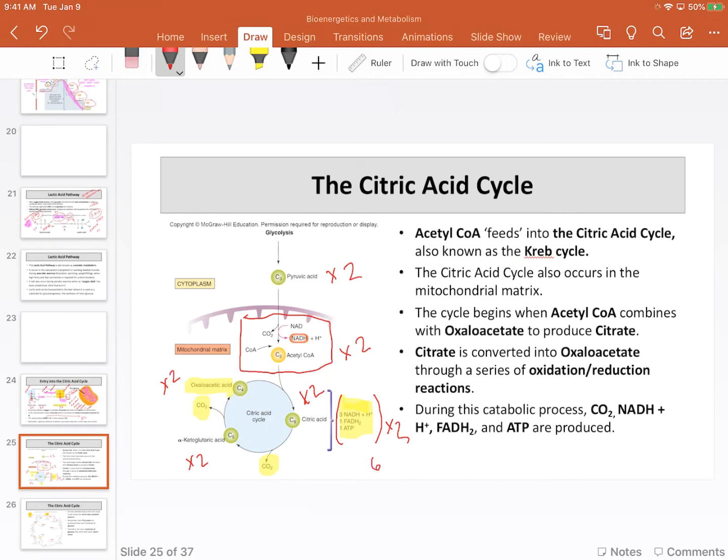Just to add this up here, that gives us the 6 NADH from this citric acid process plus its tagalong hydrogen, two FADH2s, and two ATP.